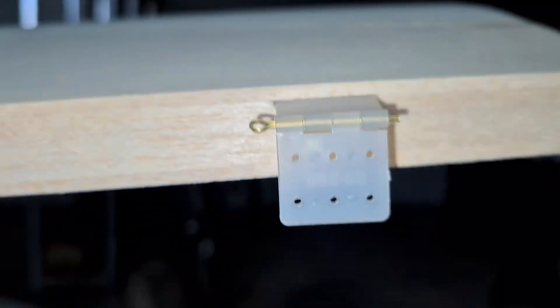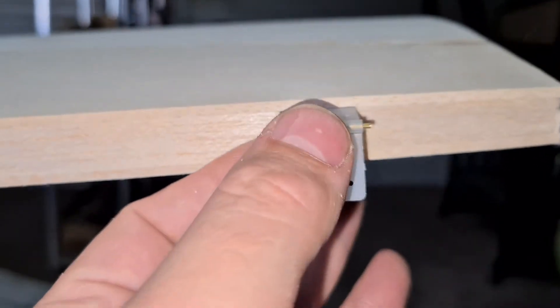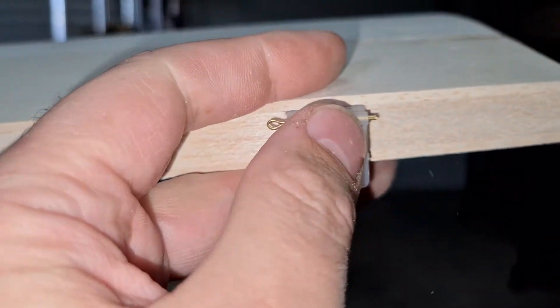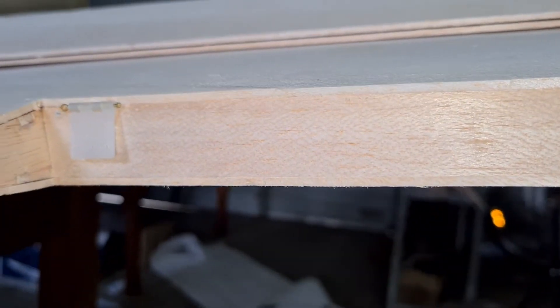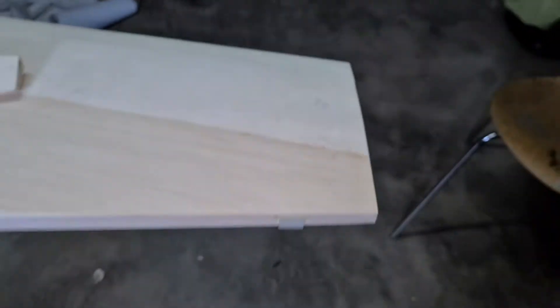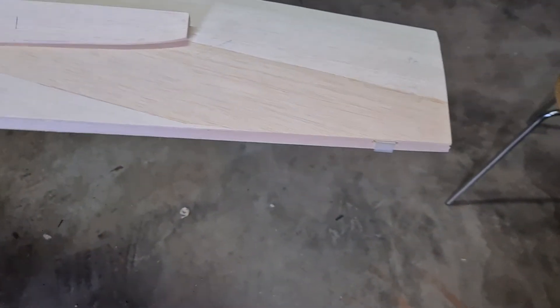I tested the fit, made sure that this hinge was flush with the top of that spar so that when I put the sheeting over it, it sort of sandwiched and made it nice and snug. That's what the plan told me to do, and it's worked out really well along the trailing edge there. I'm happy with that.